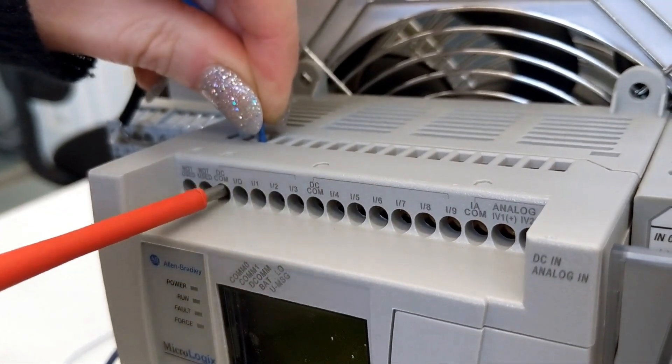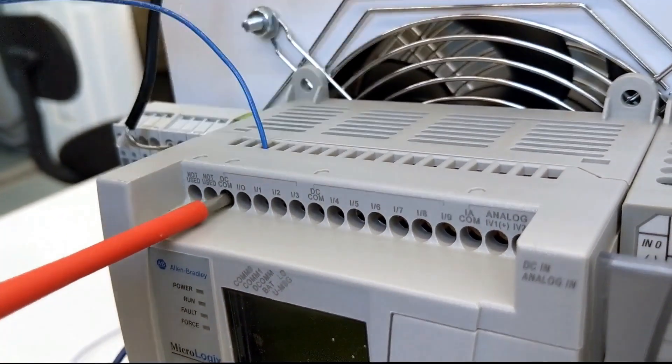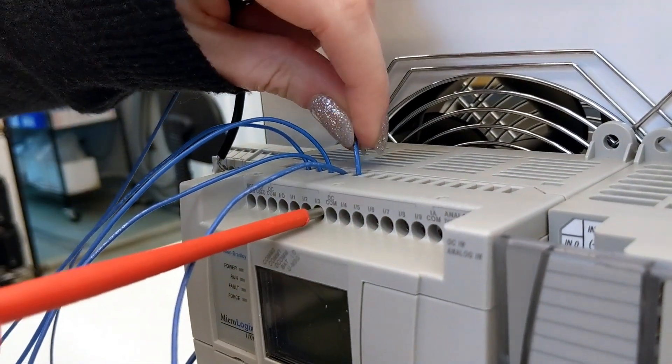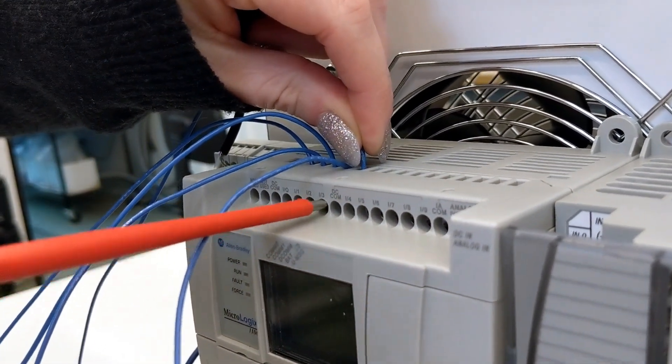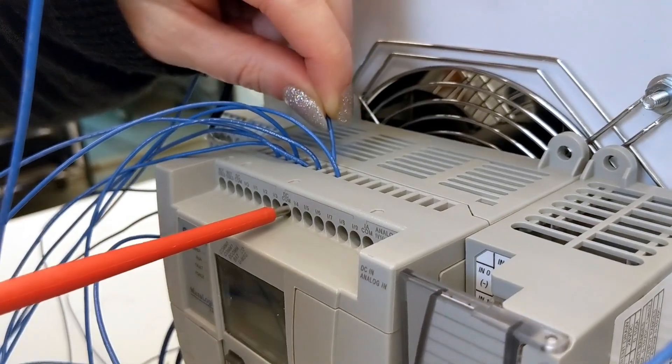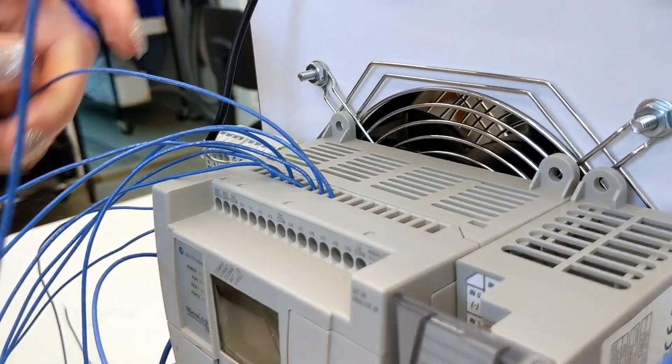Next, I'm going to connect the wires to the top of the PLC. You'll need wires on both DCCOMs, I-0, I-1, I-2, I-3, and I-4 terminals.